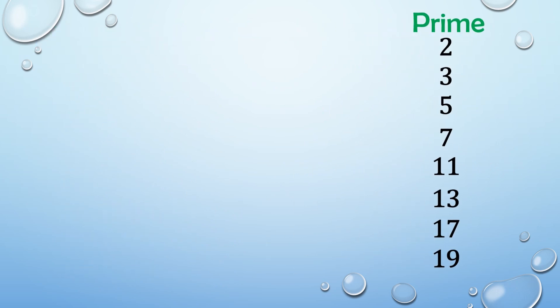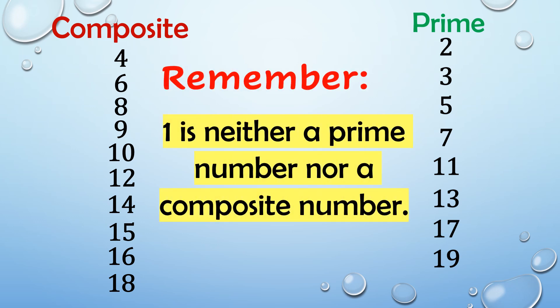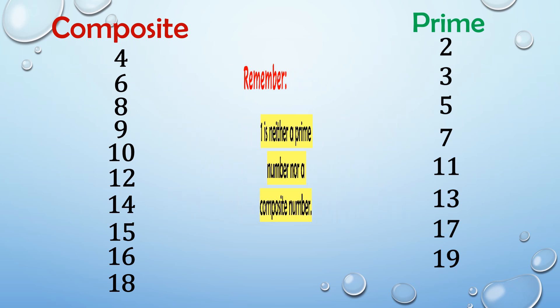Again, we have listed the prime numbers less than 20. Now let's list down the composite numbers less than 20. We have 4, 6, 8, 9, 10, 12, 14, 15, 16, and 18. From the list of prime numbers and composite numbers less than 20, you might be wondering that 1 is not included. That is because 1 is neither a prime number nor a composite number — it is a special number. So the first composite number is 4.